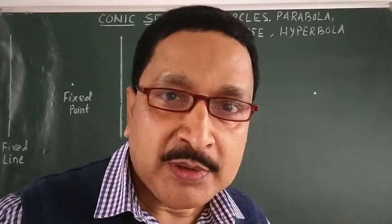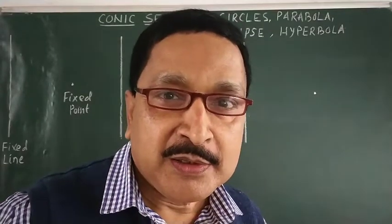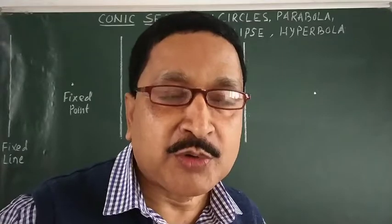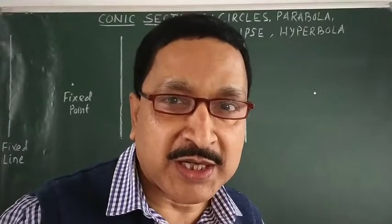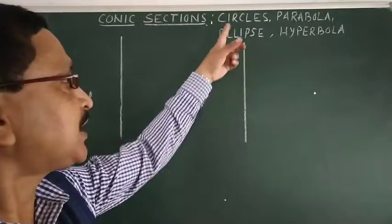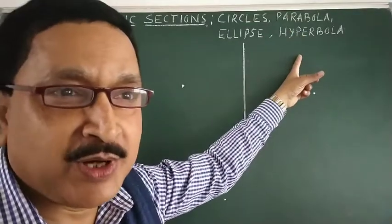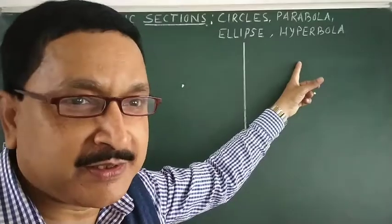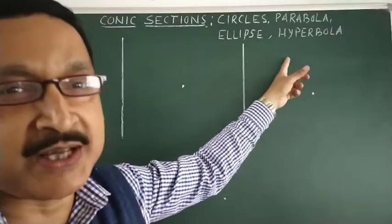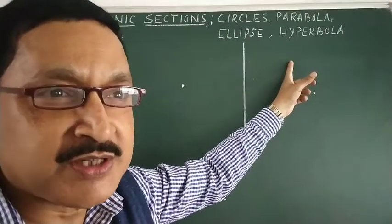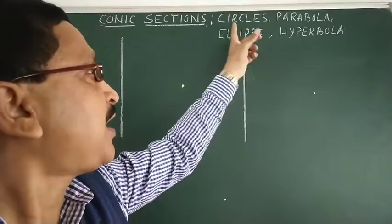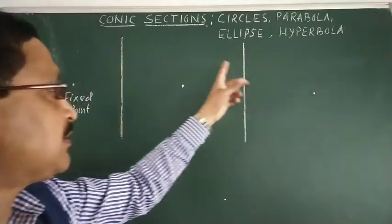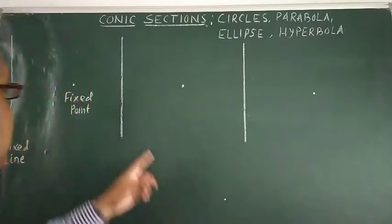Hello one and all. I am going to share a video on the conic sections. The conic sections include circles, parabola, ellipse, and hyperbola. If the cone is cut in different styles, we get all four sections. I am not going to discuss how we get these — let us come straight to the point.